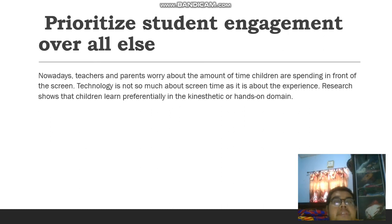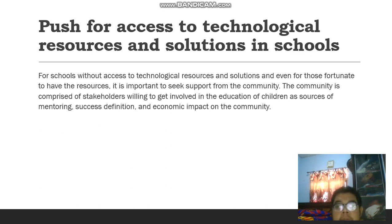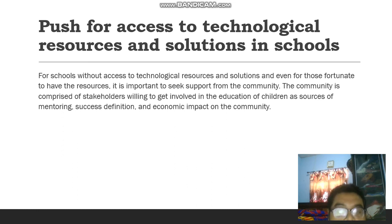Number four is prioritize student engagement over all else. Nowadays teachers and parents worry about the amount of time children are spending in front of the screen. Technology is not so much about screen time — it is about the experience. Research shows that children learn best in the kinesthetic or hands-on domain. Number five is push for access to technological resources and solutions in school. For schools without access to technological resources, and even for those fortunate to have them, it is important to seek community support comprised of stakeholders willing to get involved in the education of children as sources of mentoring, success, and economic impact.